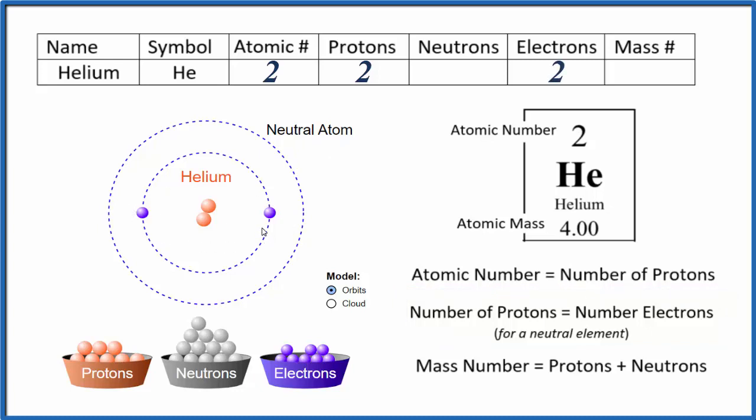Now we need to figure out the neutrons and mass number. For helium, if we look back at the periodic table, we can see the atomic mass is 4.00. That means helium atoms will have a mass number of 4 - that's 2 protons plus 2 neutrons. Mass number is the number of protons plus neutrons, so we have 2 protons, we put 2 neutrons.